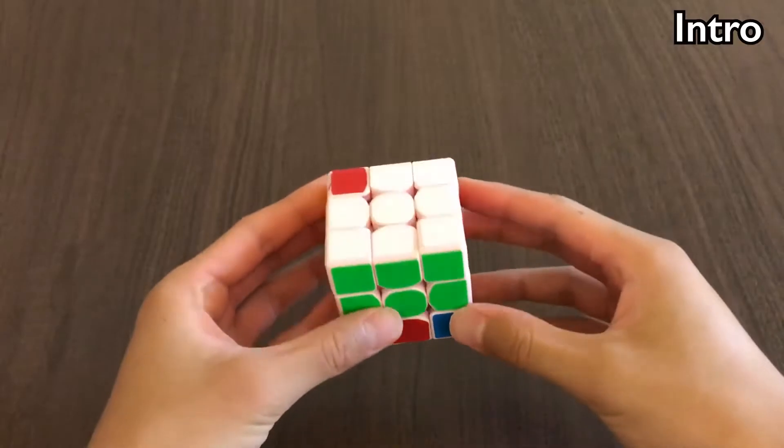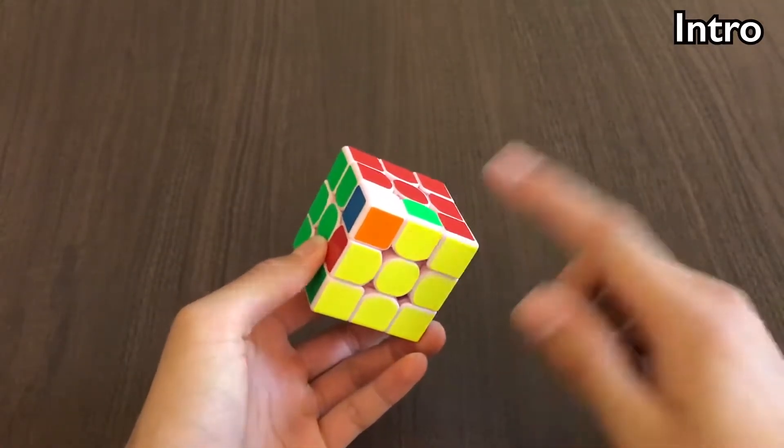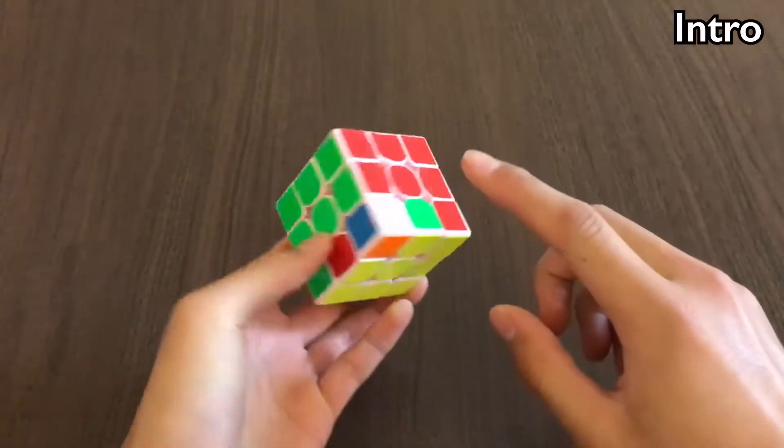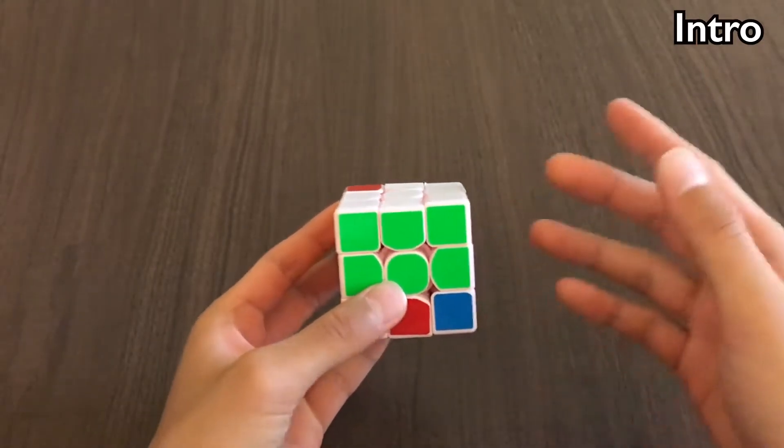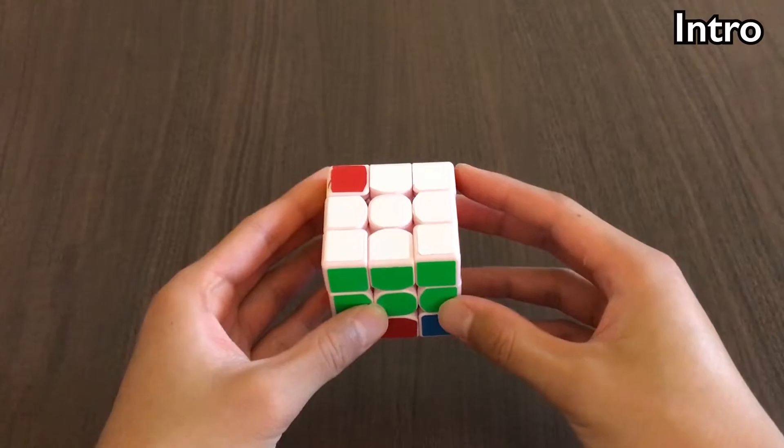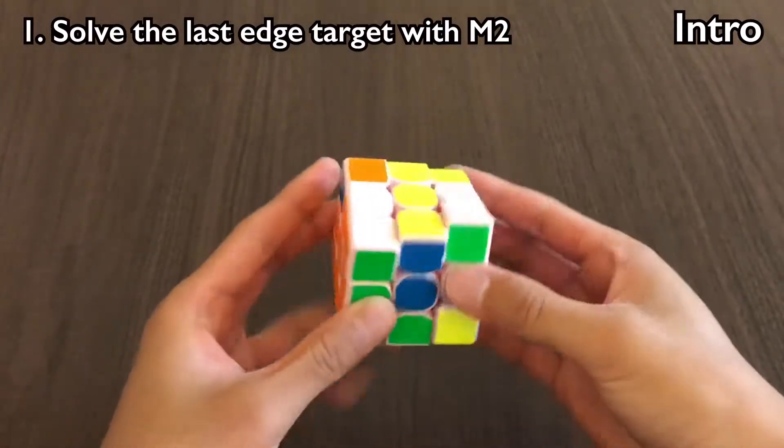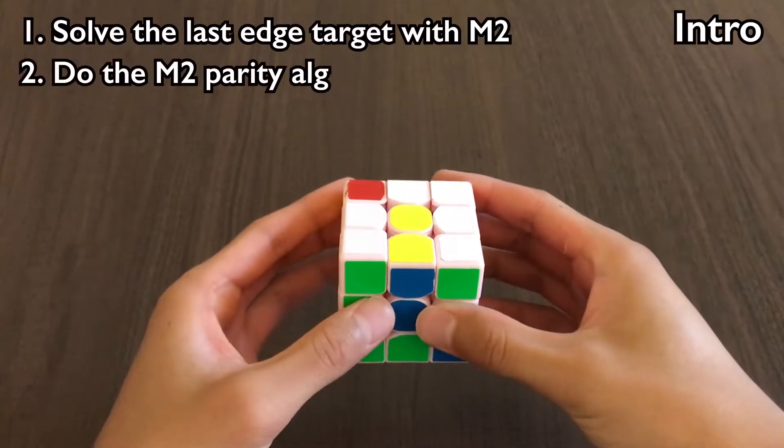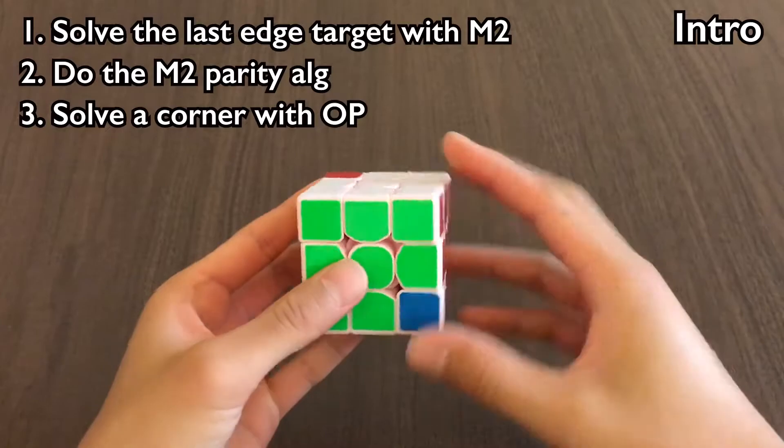Let's say we have this scramble for multi-blind. For edges, this is our buffer, and it needs to go here, so there's one edge target. For corners, this is our buffer, and it needs to go here, so that's one corner target. Now since we have an odd number of targets for edges and corners, we have parity. Now the standard way that most people deal with multi-blind parity is solve the last edge target with M2, do the M2 parity alg, and then solve the corner with old Pacman.